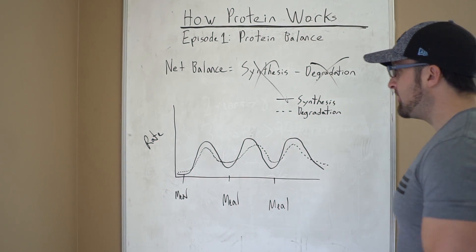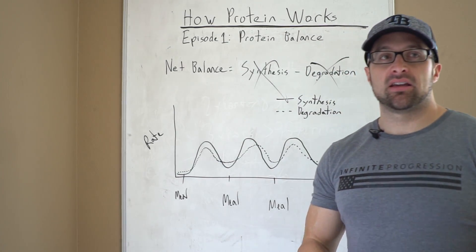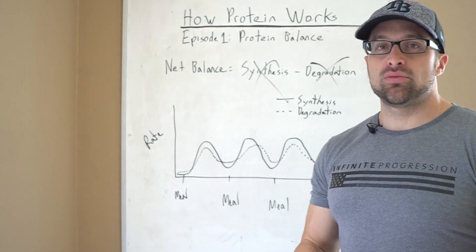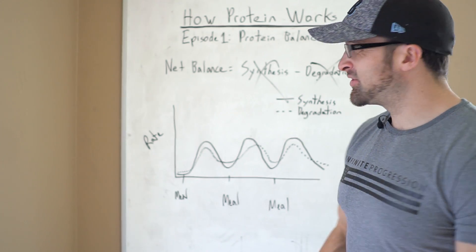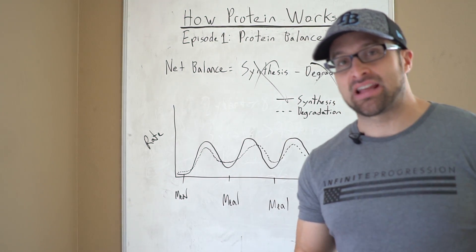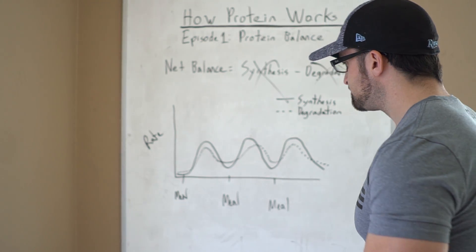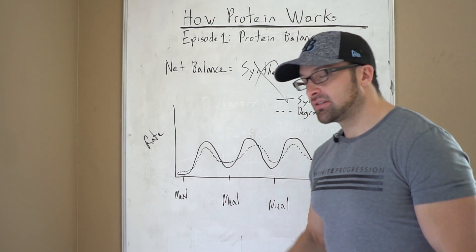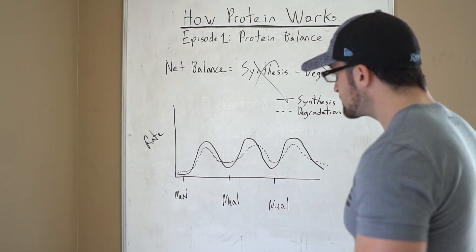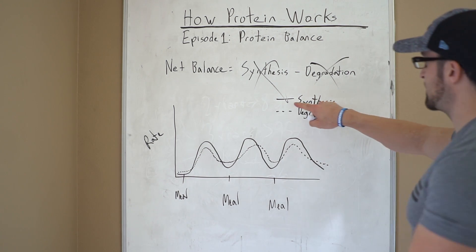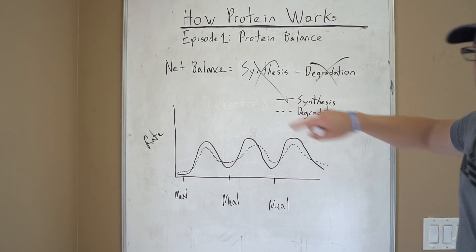Now, how does that look in terms of the way food affects this, particularly if you eat enough protein? Now we're going to talk about the exact amounts and what actually happens on a molecular level in coming episodes. But in general, what happens is when you eat a meal containing sufficient protein, you get an increase in muscle protein synthesis, which is this solid line here.